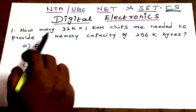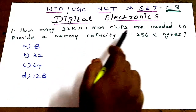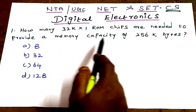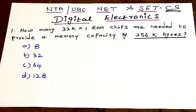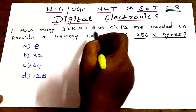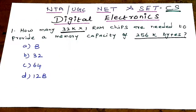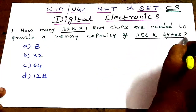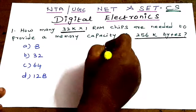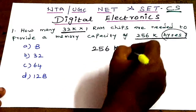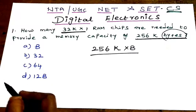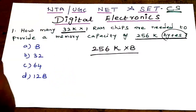First question: how many 32K×1 RAM chips are needed to provide a memory capacity of 256K bytes? 256K bytes memory capacity is needed. RAM chip size is 32K×1. To find how many RAM chips are needed, first the memory capacity needed is 256K bytes divided by the RAM chip size.